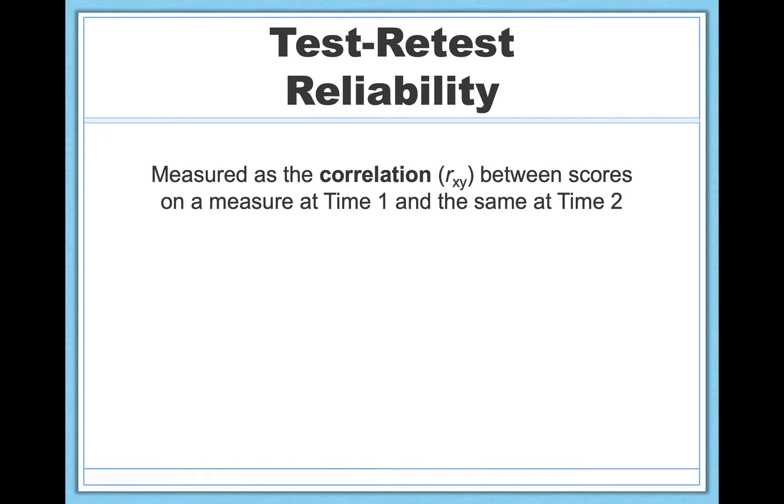And this is typically measured as a simple correlation, which you already know how to calculate from previous videos. So it's a correlation between how people score at time 1, when they first take the test, and those same participants, how they score at time 2, when they take the test again.